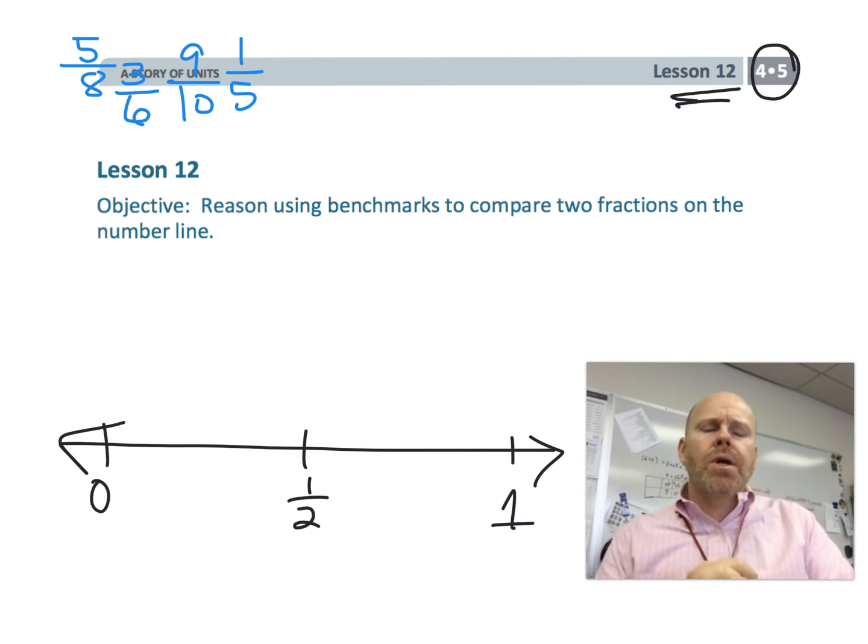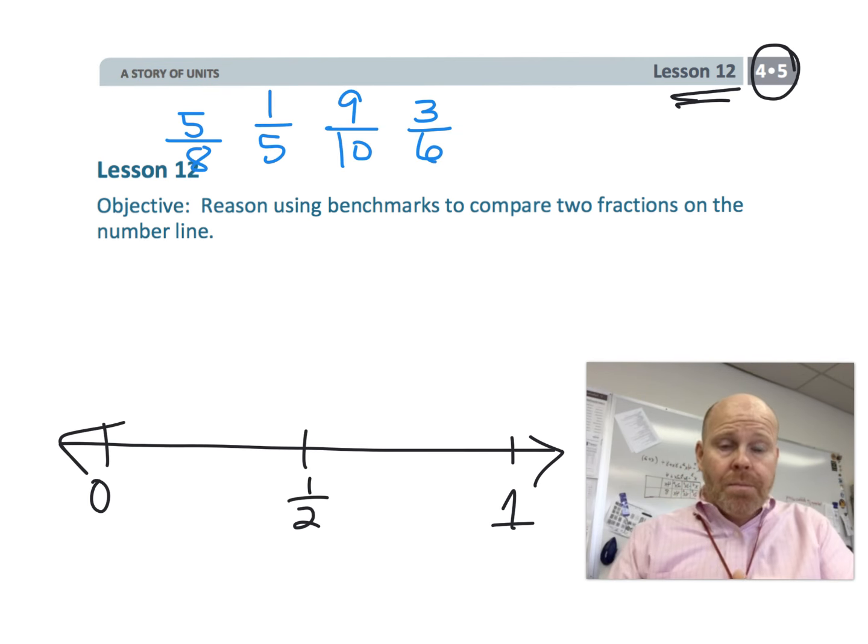We're going to be using the classic method familiar to parents and teachers from the old school way of learning math. We're using zero, a half, and one as our benchmarks, which means if we grab a fraction we should be able to compare it with one of those three benchmarks. For example, three-sixths—we know that's a half, so we can put it right there on the half.